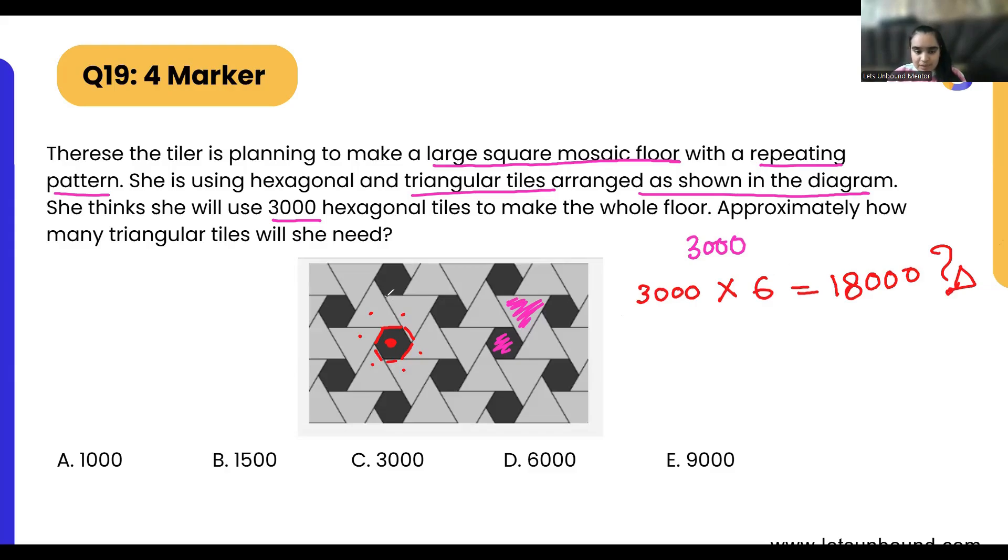We can see this triangle is attached with one hexagon, two hexagons, and three hexagons, right? That means three hexagons will have a common triangle. And the same way, all the other triangles are attached with three hexagons—one, two, three.